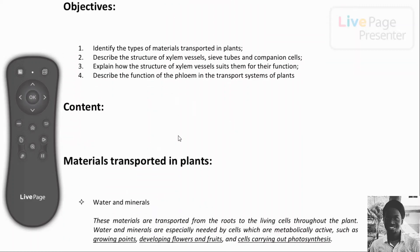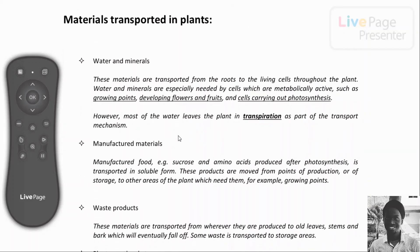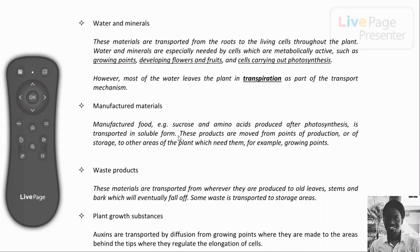Let's talk about the materials transported in plants. We have water and minerals, manufactured materials, waste products, and plant growth substances — these are the four sets of materials transported in plants. Water and minerals are transported from roots to living cells throughout the plant; they are needed especially by metabolically active cells like those in growing parts of the plant, developing flowers and fruits, and cells carrying out photosynthesis.